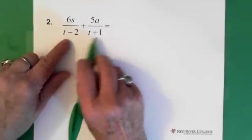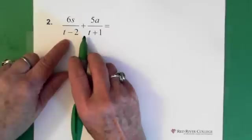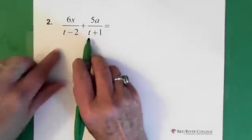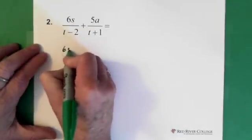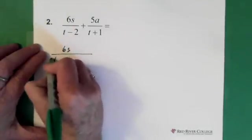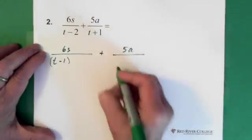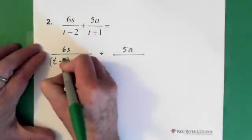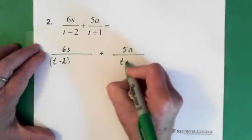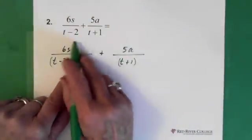So again, we have two completely different denominators. So what we do then to get our lowest common denominator is just multiply those two denominators together. So the 6s is over t minus 2 and then we're subtracting the 5a, which is over t plus 1. Now, we're going to just multiply the denominators together.